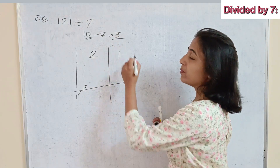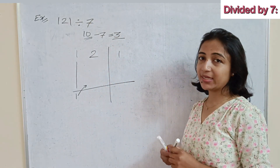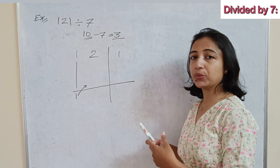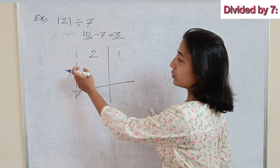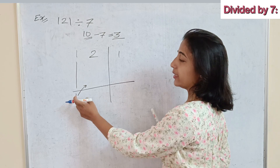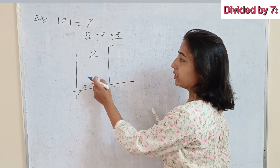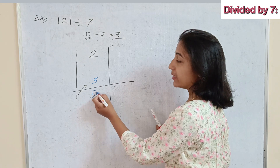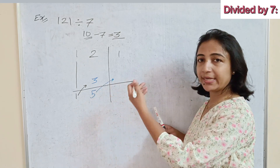Why 3 times? Because our 7 is 3 less than 10, so every step we add 3 times the current number to the next digit. So take this 1 as it is, and 3 times 1 is 3 — add that to the next number. So 2 plus 3 is 5, and then 3 times 5 is added to the next number.